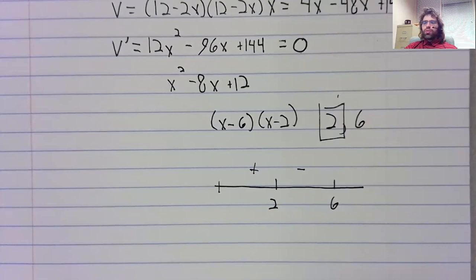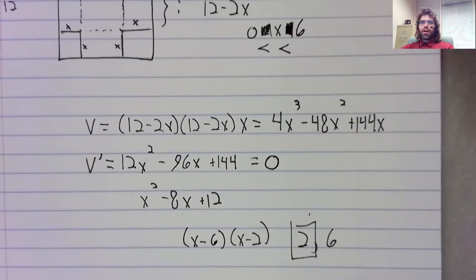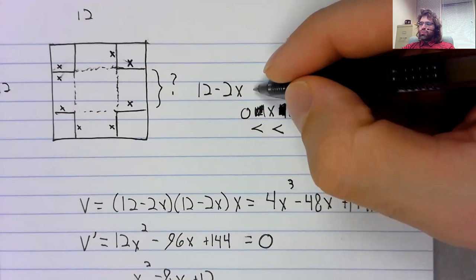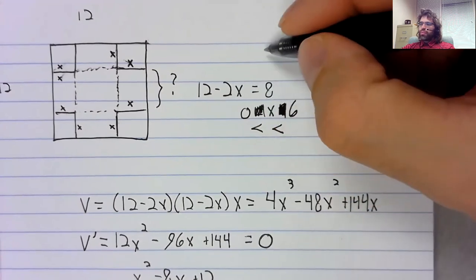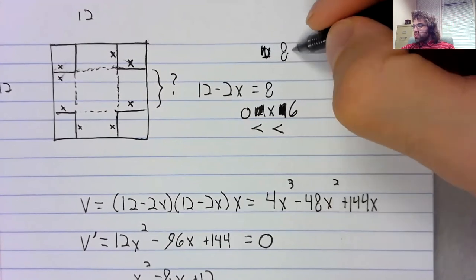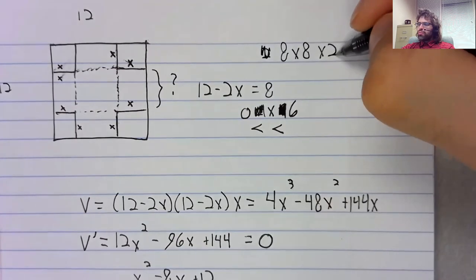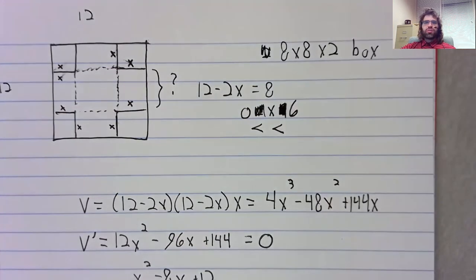So, the dimensions we are looking for to maximize the volume, if x is 2, this is 12 minus 4. We're looking for an 8 by 8 by 2 box.